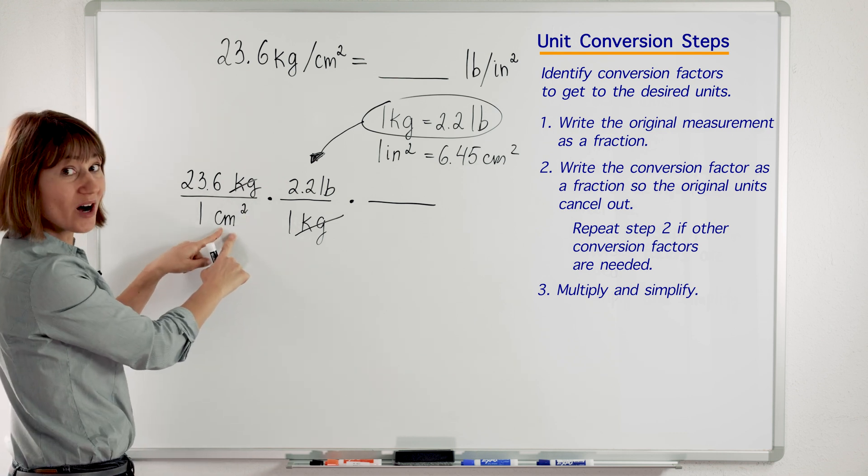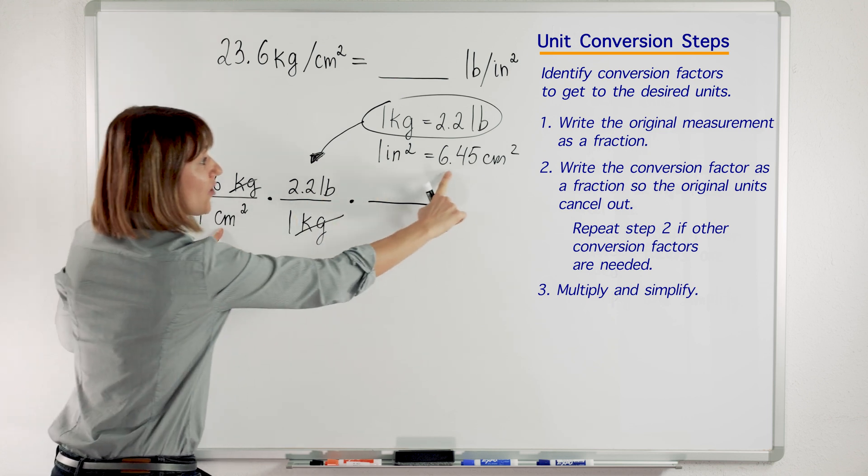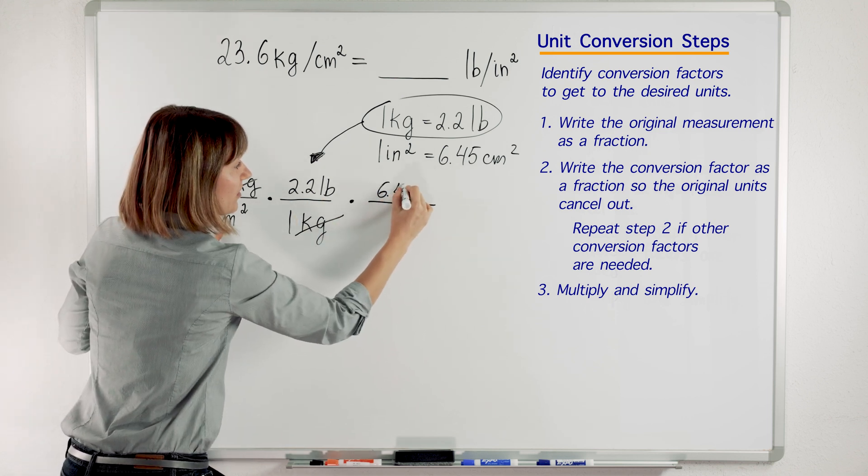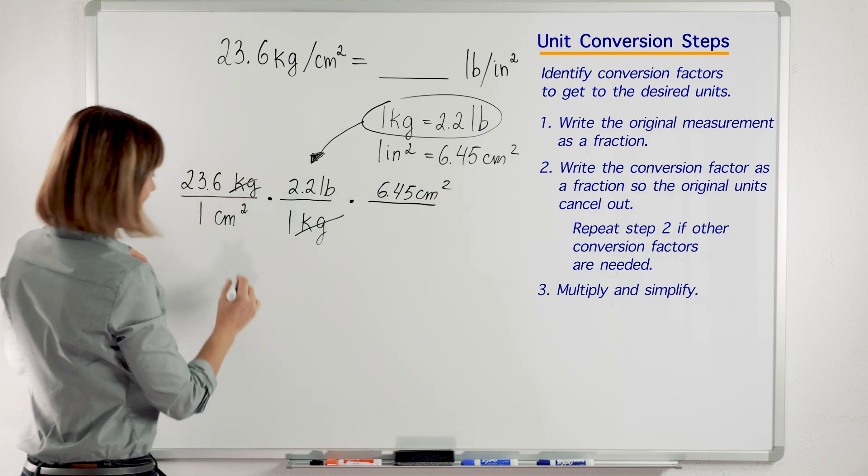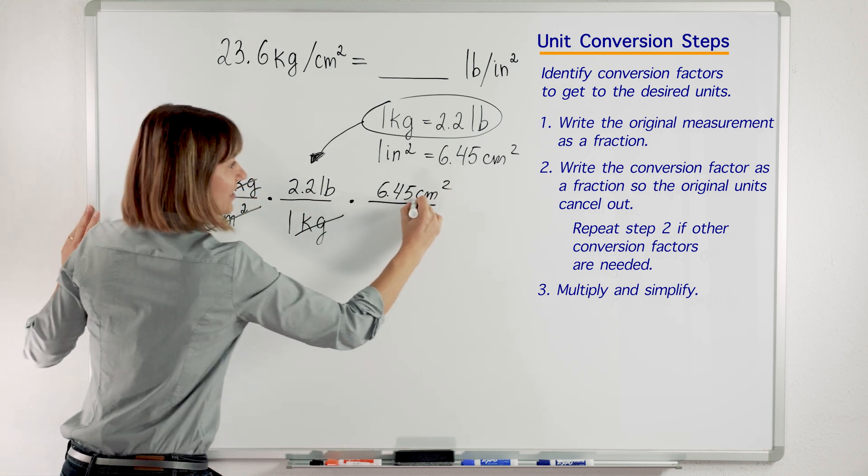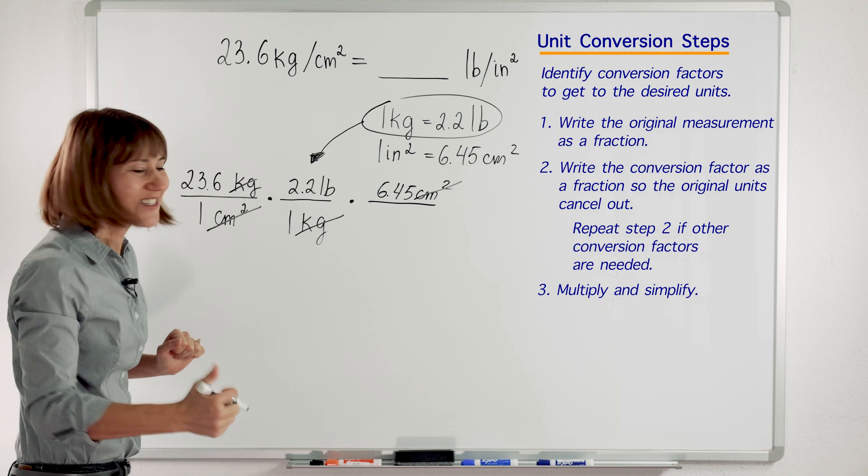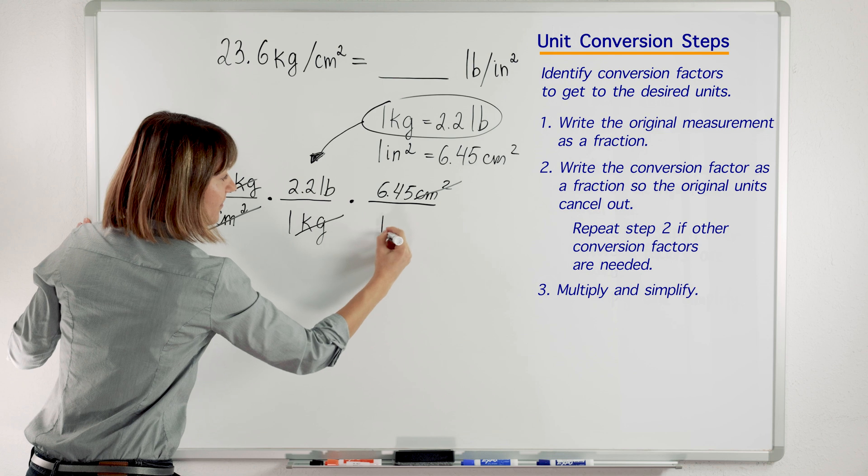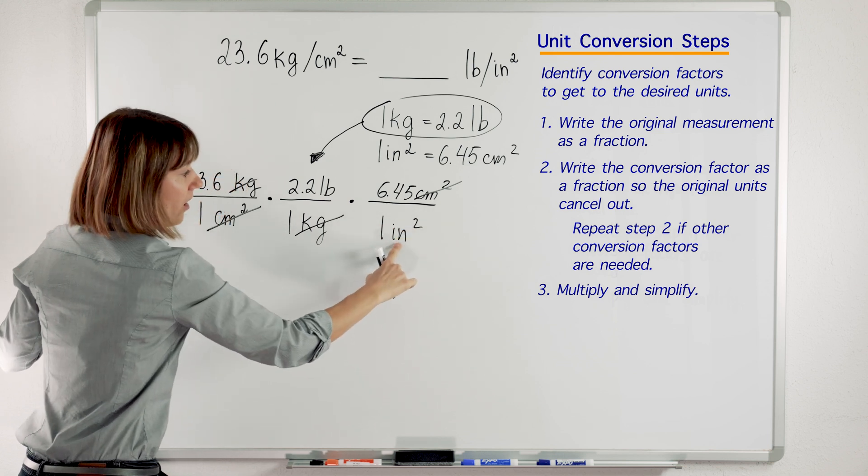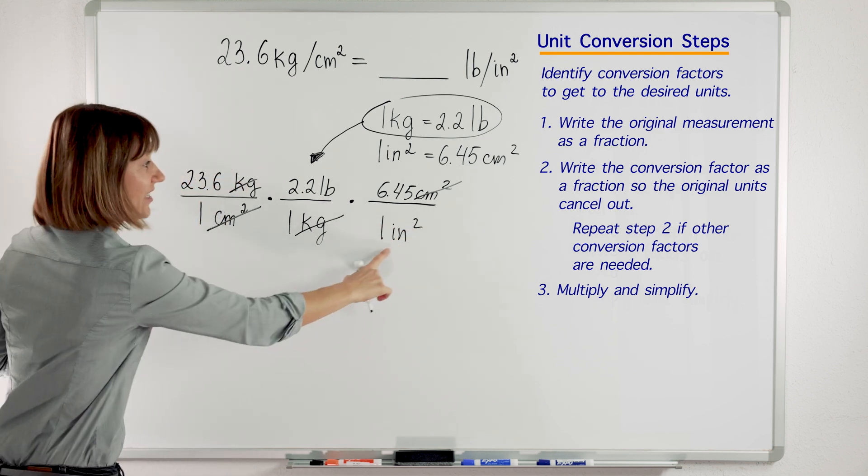Centimeter squared is on the bottom in the denominator. So I will put 6.45 centimeters squared on top so that my original units cancel out. Oh, it feels so good to cancel things out. And I will put 1 inch squared here on the bottom in the denominator.